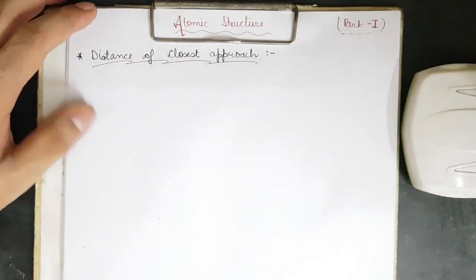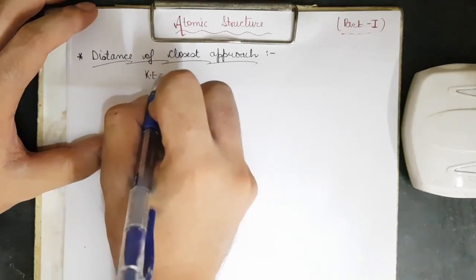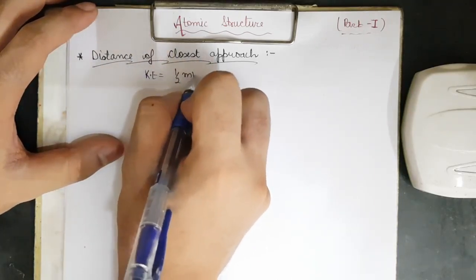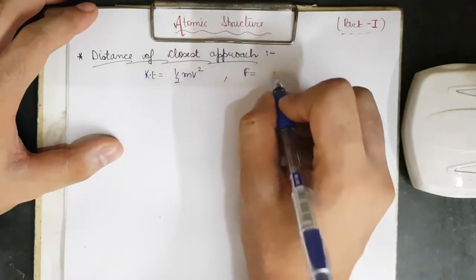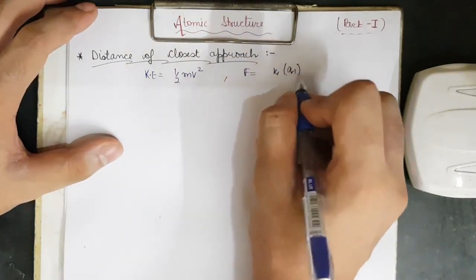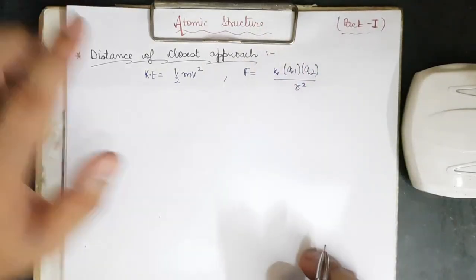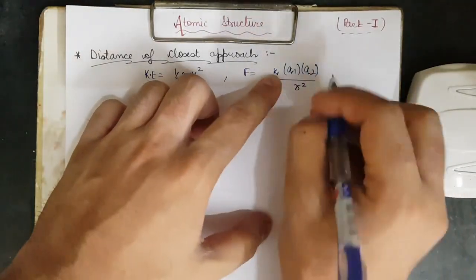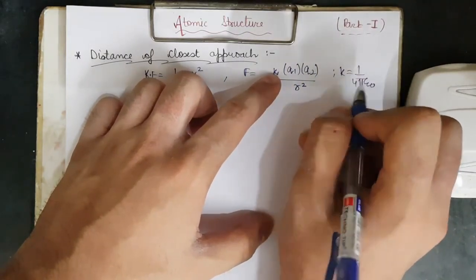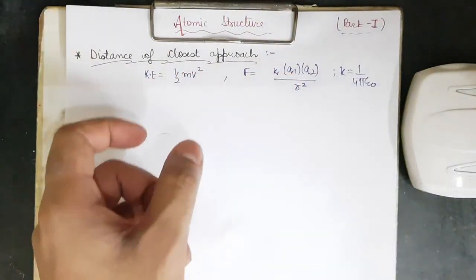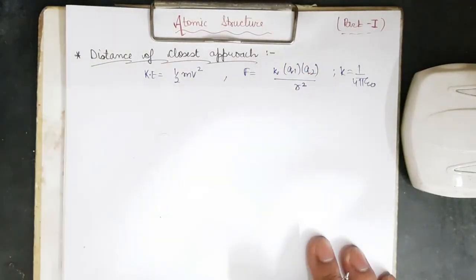Before beginning with the distance of closest approach, try to understand two concepts: the formula of kinetic energy is given by half times mass times velocity squared, and the electrostatic force is equal to k times q1 times q2 divided by r squared. Here, k is defined as 1 over 4π epsilon-naught, q1 and q2 are the charges of the two particles, and r is the distance between them.